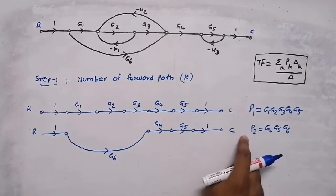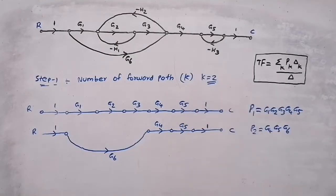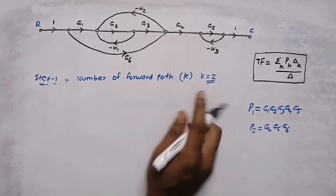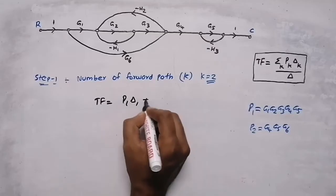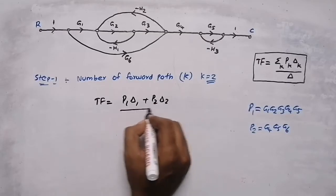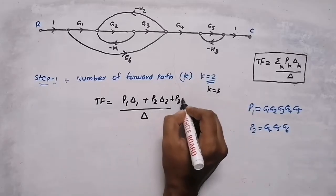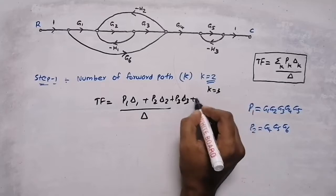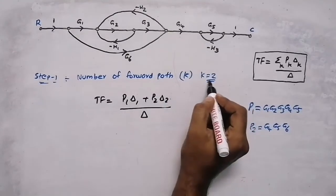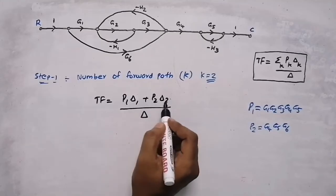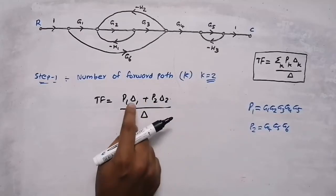There are two forward paths, so k = 2. The transfer function then becomes (P1·Δ1 + P2·Δ2) / Δ. If k were 3 or 4, we would add P3·Δ3 or P4·Δ4 accordingly. We have already found P1 and P2; now we need to find Δ1, Δ2, and Δ.